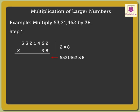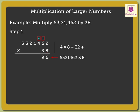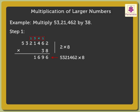2 into 8 is equal to 16. 6 into 8 is equal to 48, plus the carried over 1 is equal to 49. Next, 4 into 8 is equal to 32, plus the carried over 4 is equal to 36. 1 into 8 is equal to 8, plus the carried over 3 is equal to 11. 2 into 8 is equal to 16, plus the carried over 1 is equal to 17.